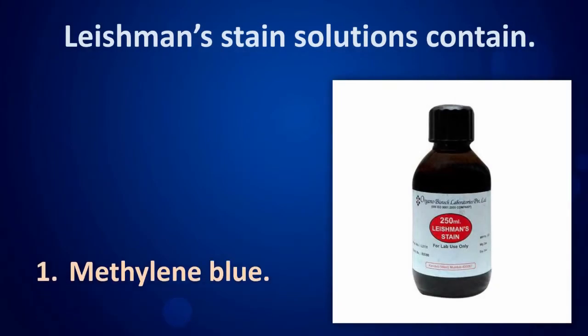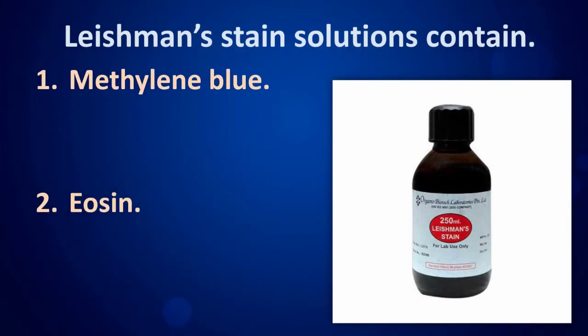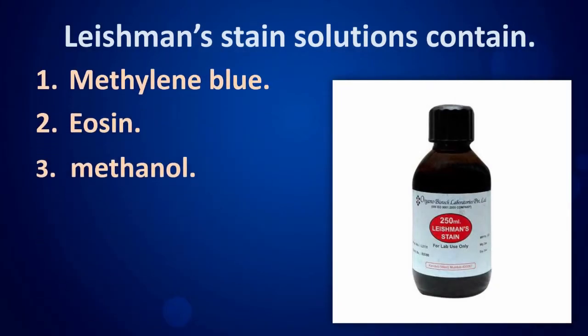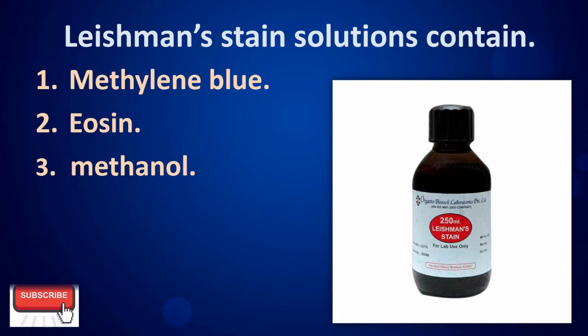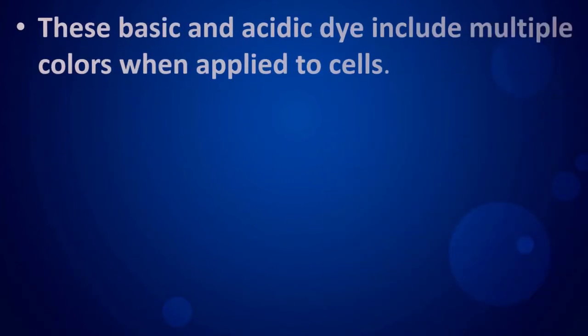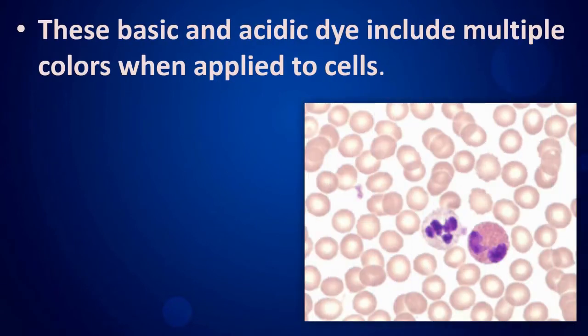Leishman stain solutions contain methylene blue, eosin, and methanol. These basic and acidic dyes include multiple colors when applied to cells.